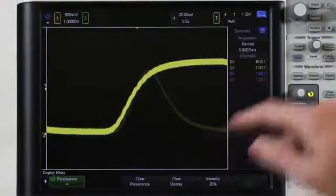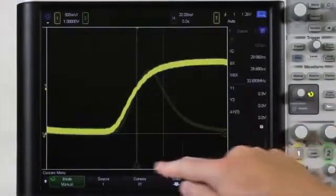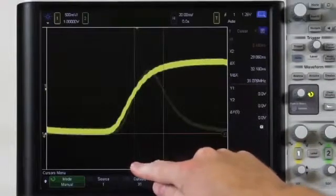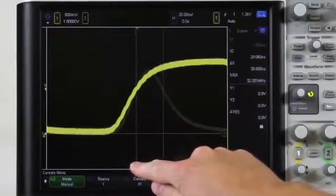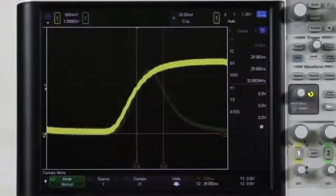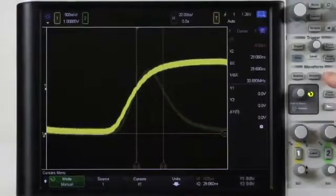We can then use cursors to identify the width of the glitch. As you can see, the glitch is approximately 30 nanoseconds in width. Now that we know the width of the glitch, let's isolate it using the pulse width trigger.